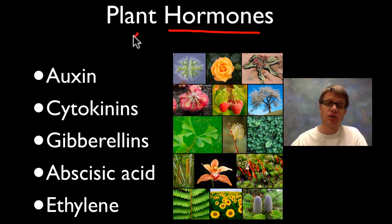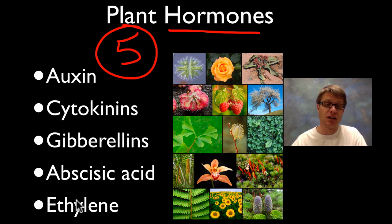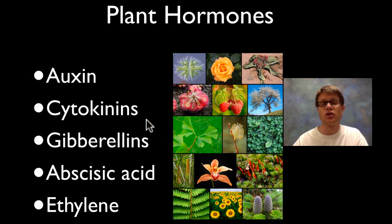And so the five that we're going to learn are going to be auxin, cytokinins, gibberellins, abscisic acid and then finally ethylene. There are a lot of other hormones that are out there, but basically these are five ones that are found in a number of different plants. So it's a good place to start.